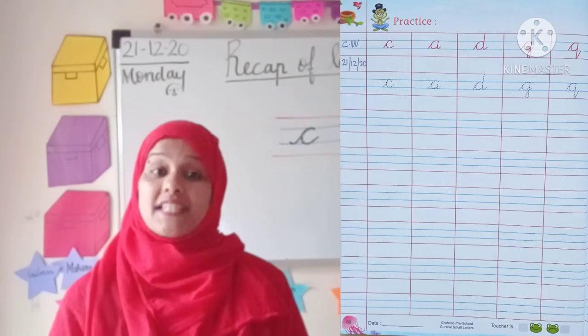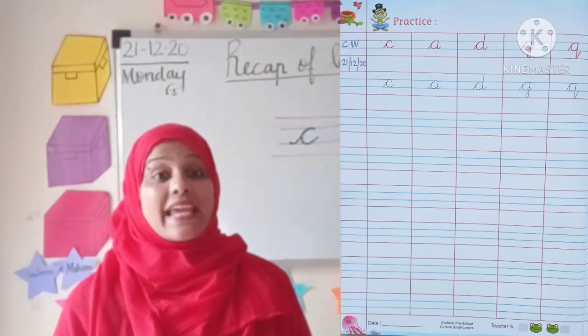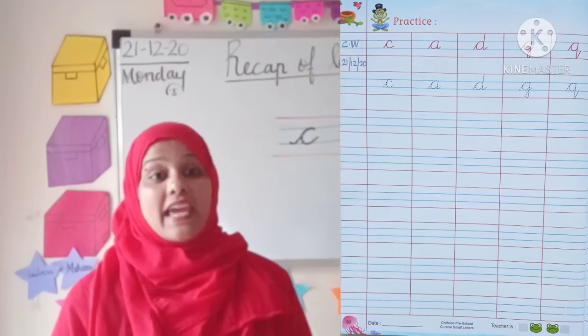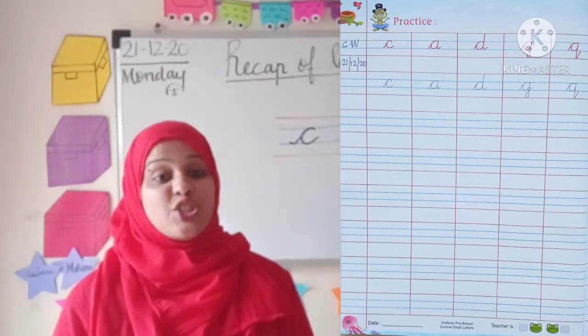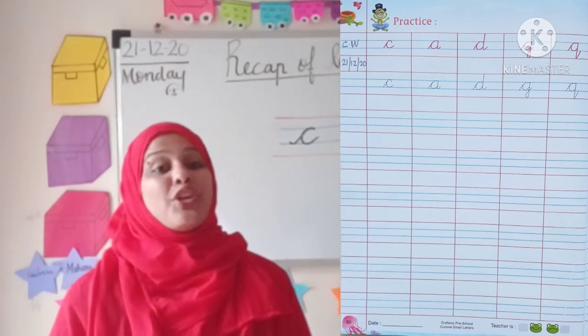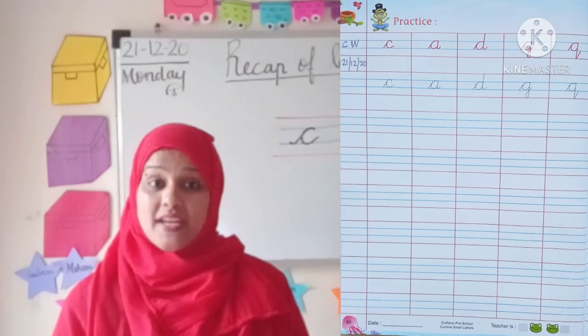And then after that, there are some more red and blue lines. Come on! Let's start writing. C says Q. A says A. D says D. G says G. Q says Q. I hope you are finished tracing the letter.